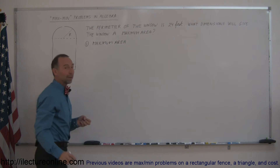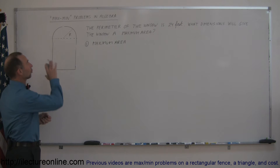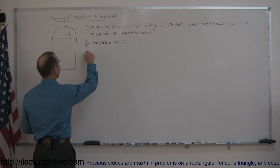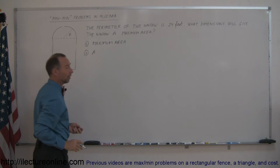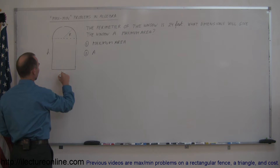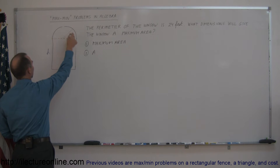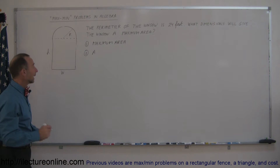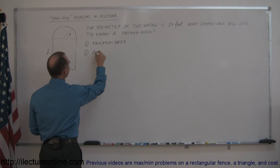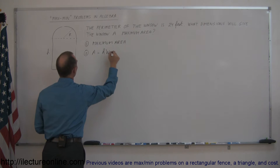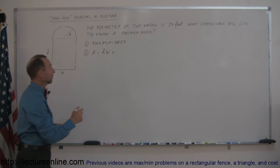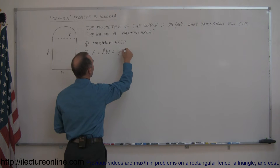The second step is to find an equation to describe the thing you're trying to maximize. In this case we're trying to maximize the area, so we need an equation that says area equals, in terms of all the other variables. Let's call the height of the rectangular portion H, the width of the rectangle W, and the radius of the semicircle R. Then the area would be the area of the rectangle, H times W, plus the area of the semicircle. The area of the circle is πr², so the area of the semicircle — half of that — would be one-half πr².